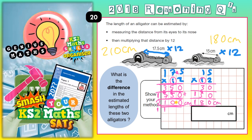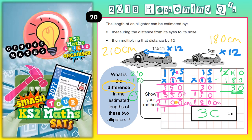Let's read the question again: what is the difference in the estimated lengths of these two alligators? So we just need to find the difference between 210 and 180. Finding the difference means do a subtract: 210 minus 180. 0 take away 0 is 0. 1 take away 8 we can't do, so borrow from the 2 — the 2 becomes 1 and the 1 we borrowed makes that 11. 11 take away 8 is 3. 1 take away 1 is nothing. So that's 30 centimetres — our final answer is 30 centimetres.